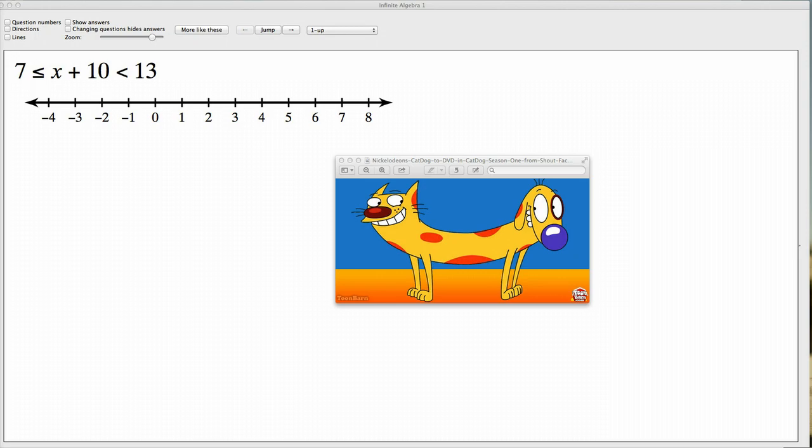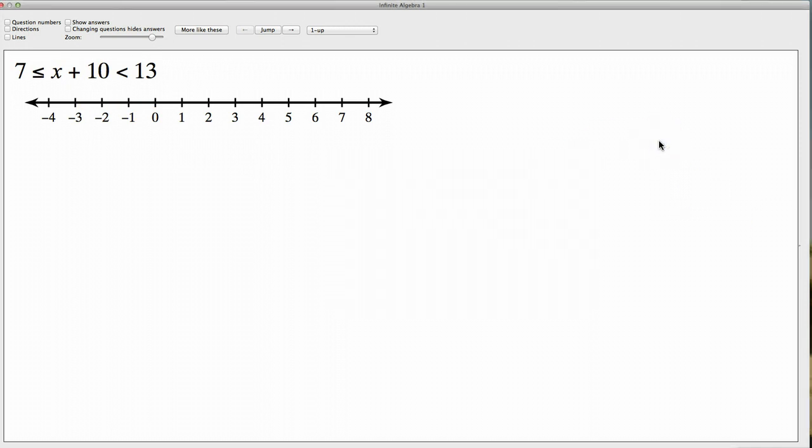That's compound inequalities in general. That's how you can see them in real life. Now, let's solve a few of them. The solving part of compound inequalities always reminds me of CatDog. You may not know CatDog, or you might know it. It was a show on Nickelodeon a few years ago. The idea was that it had a cat's head on one end and a dog head on the other, and it had a body in the middle.